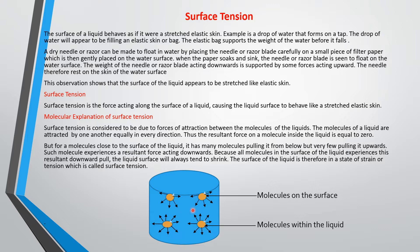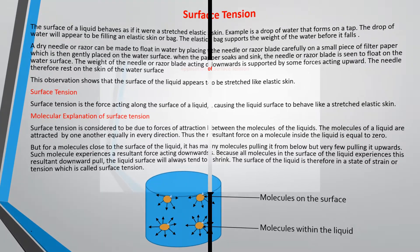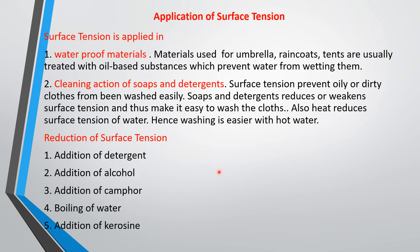We're going to look at the applications of surface tension in everyday life. If you look at some materials, you'll see that they have a surface that is like waterproof — water does not easily penetrate through them. Materials used for umbrellas, tents, and similar items are usually treated with oil-based substances which prevent water from wetting them. This is one application of surface tension.